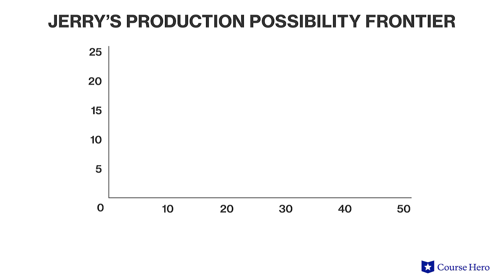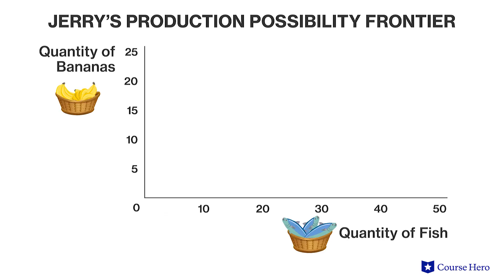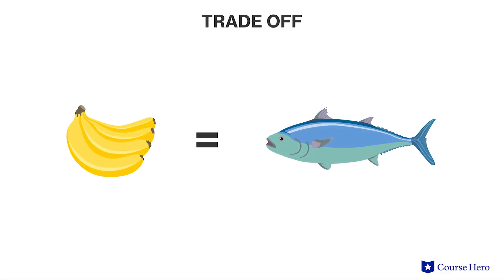Our PPF will show the trade-off between the two goods on a graph, and it will also show the maximum amount of fish that Jerry can catch given the number of bananas gathered. Our PPF will have a negative slope, which implies that the quantity of one good decreases as the quantity of the other good increases. We'll start with a straight-line PPF, which implies that the trade-off for Jerry is constant. In the simplest model, Jerry gives up the same amount of bananas every time he catches one more fish. Later we think about what a PPF looks like if it becomes more and more costly to catch a fish or gather bananas. Each hour he spends catching fish limits the amount of time he can gather bananas.